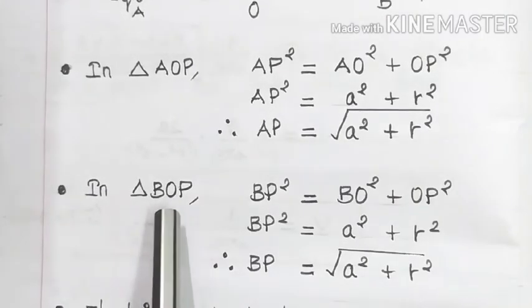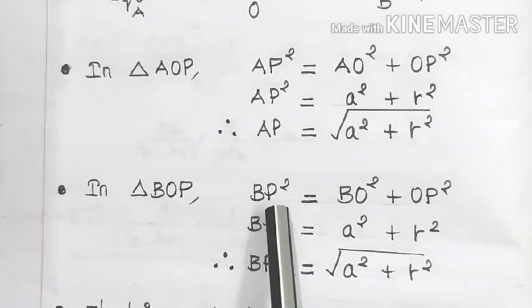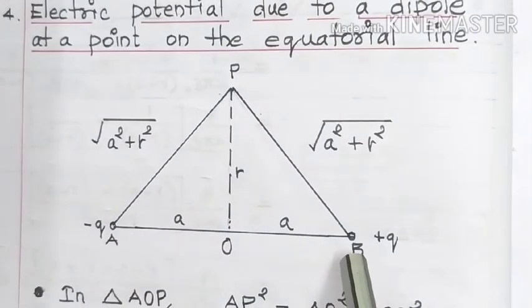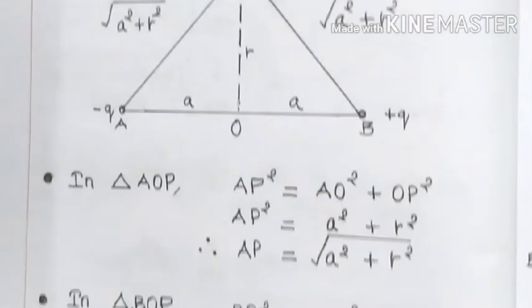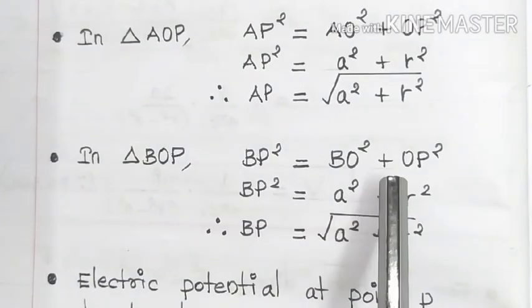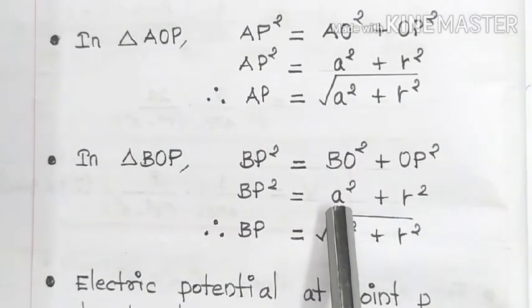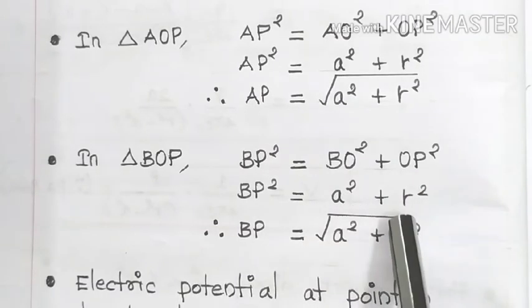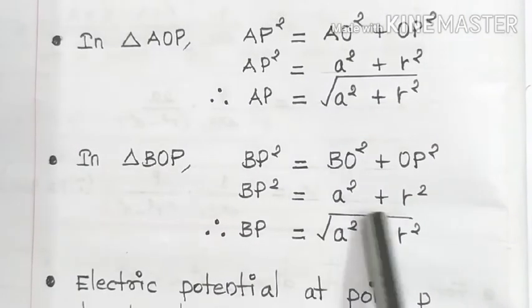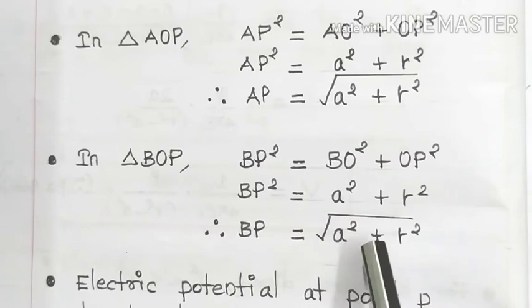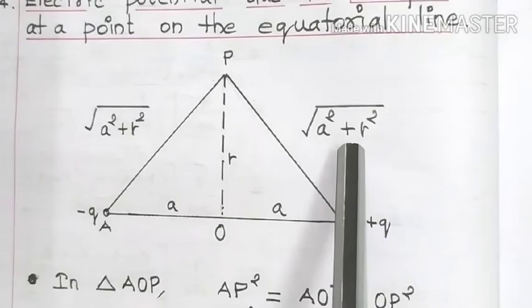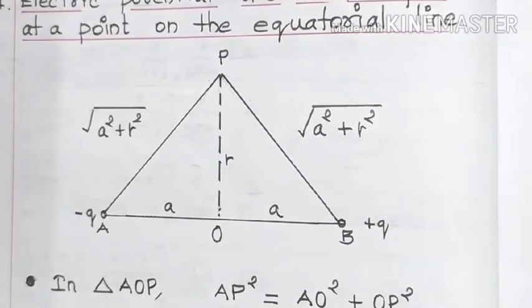In triangle BOP, BP² is equal to BO² plus OP². BO is nothing but small 'a', so a², plus OP is nothing but r, so r². So if we take the square root of this side, then BP is equal to square root of a² plus r². That is what I have written over here: BP is equal to square root of a² plus r².